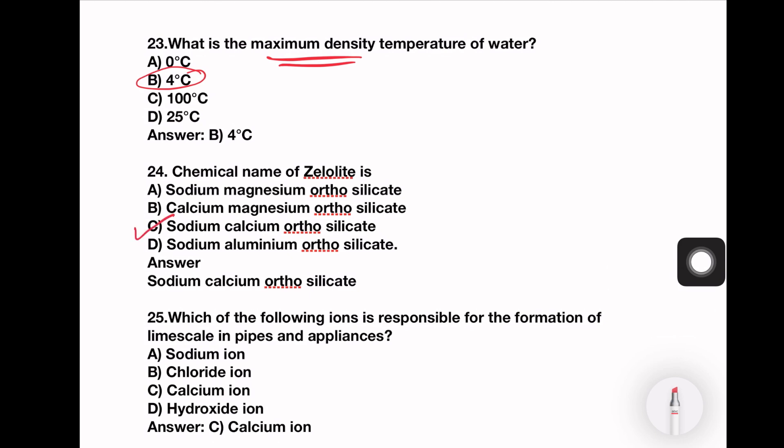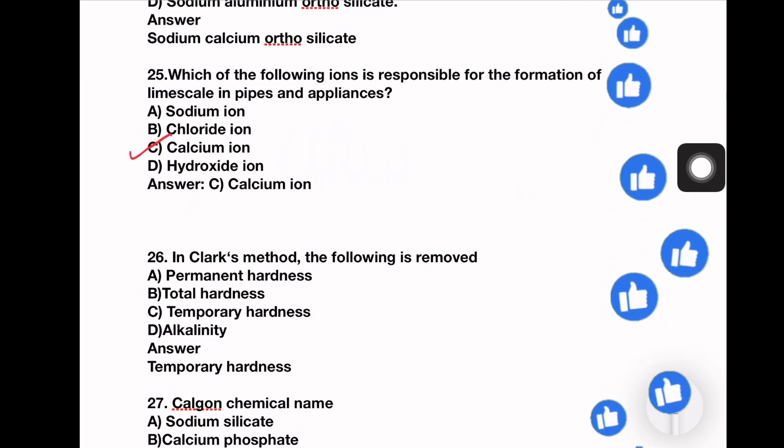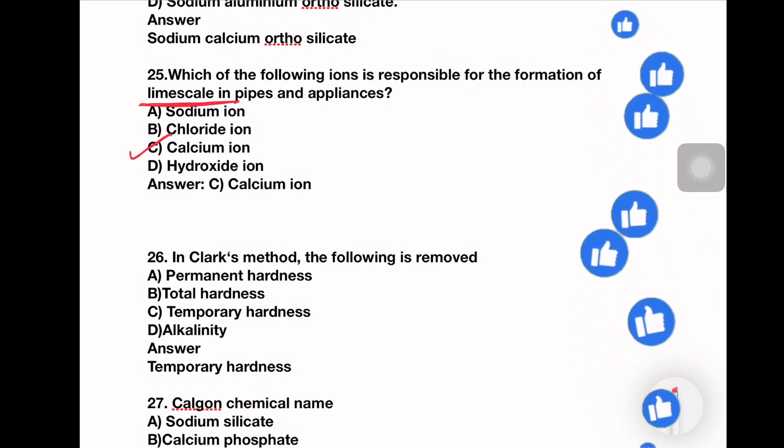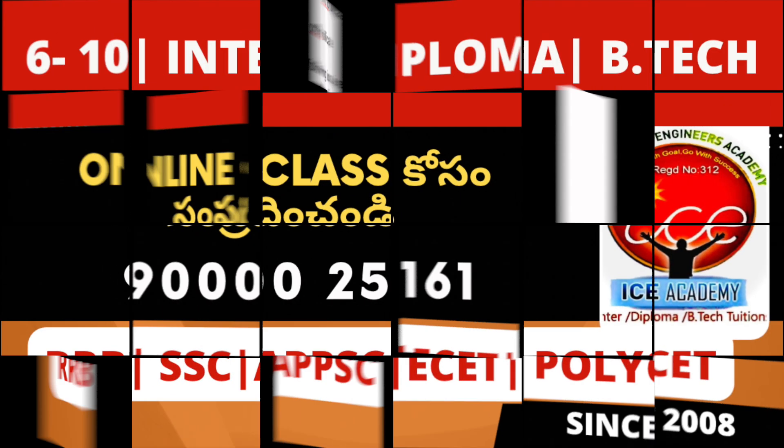Next question. Which of the following ions is responsible for the formation of lime scale in the pipes and appliances? Sodium ion, chloride, calcium, or hydroxide. So calcium is the right answer. Calcium is responsible for formation of lime scale in the pipeline. Option number C is the right answer.